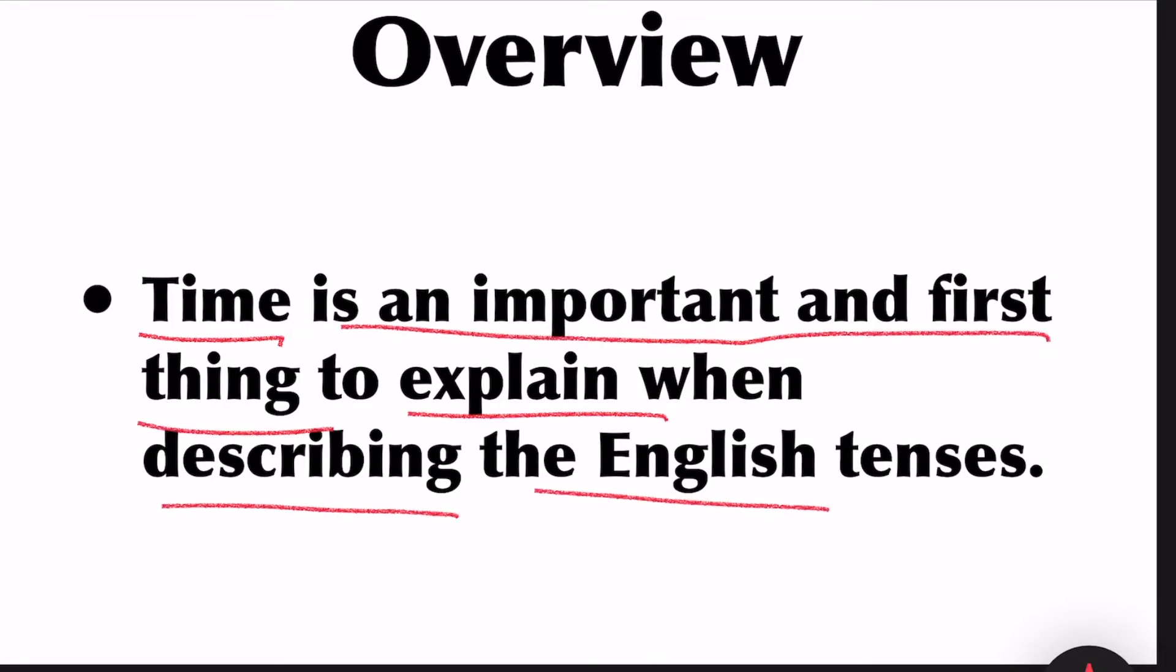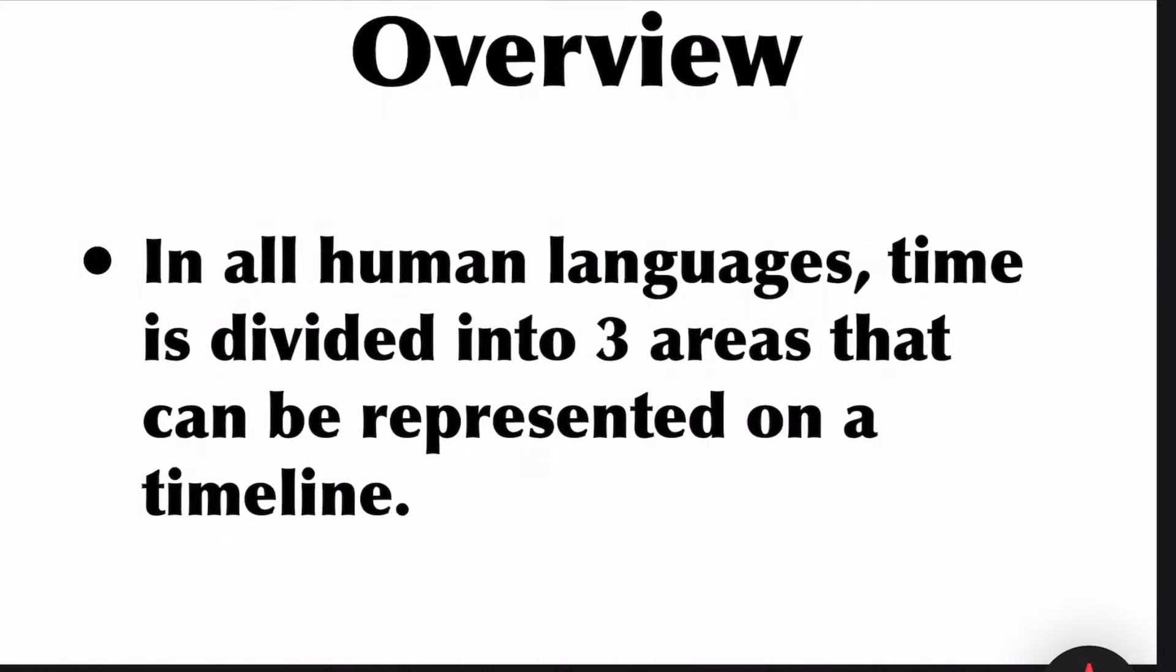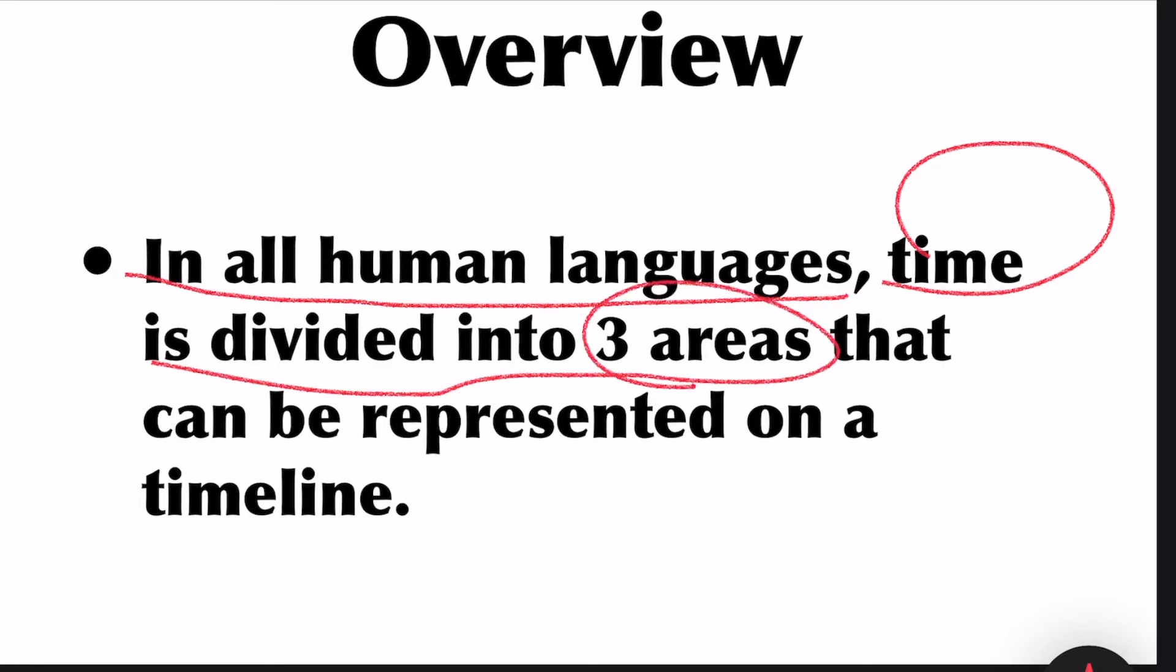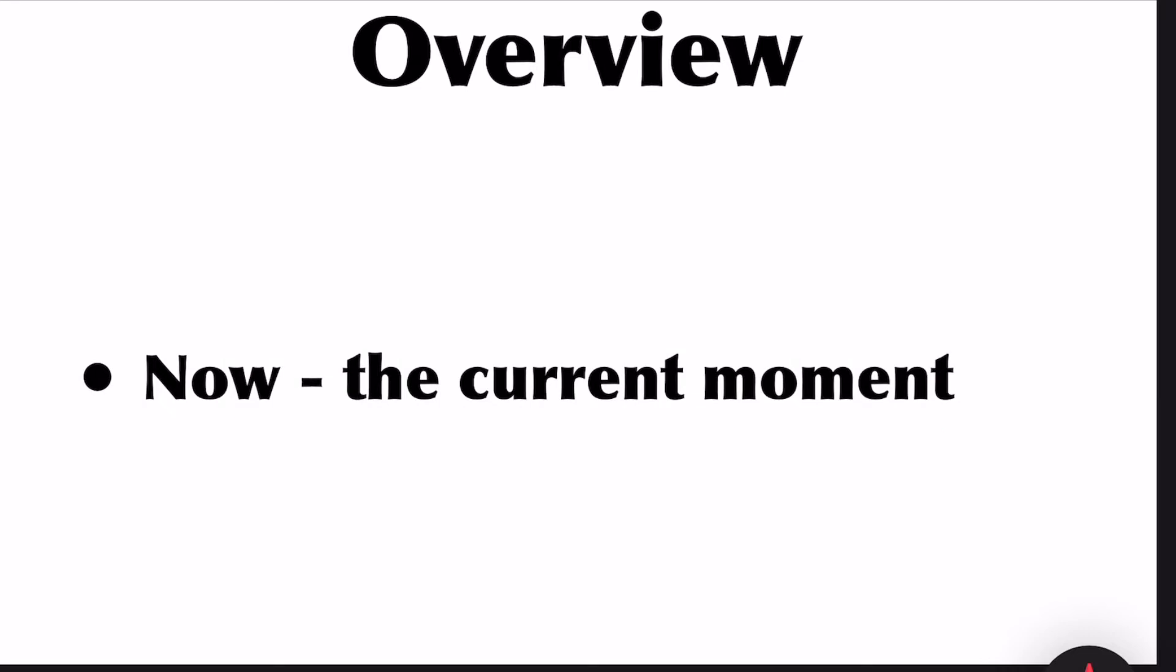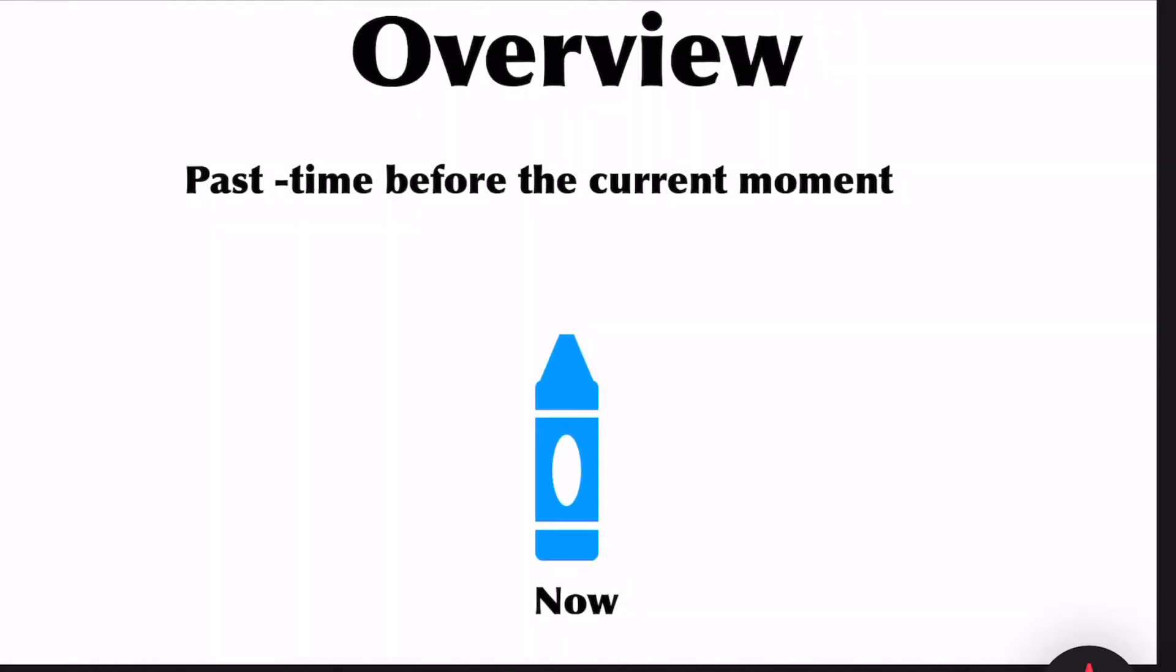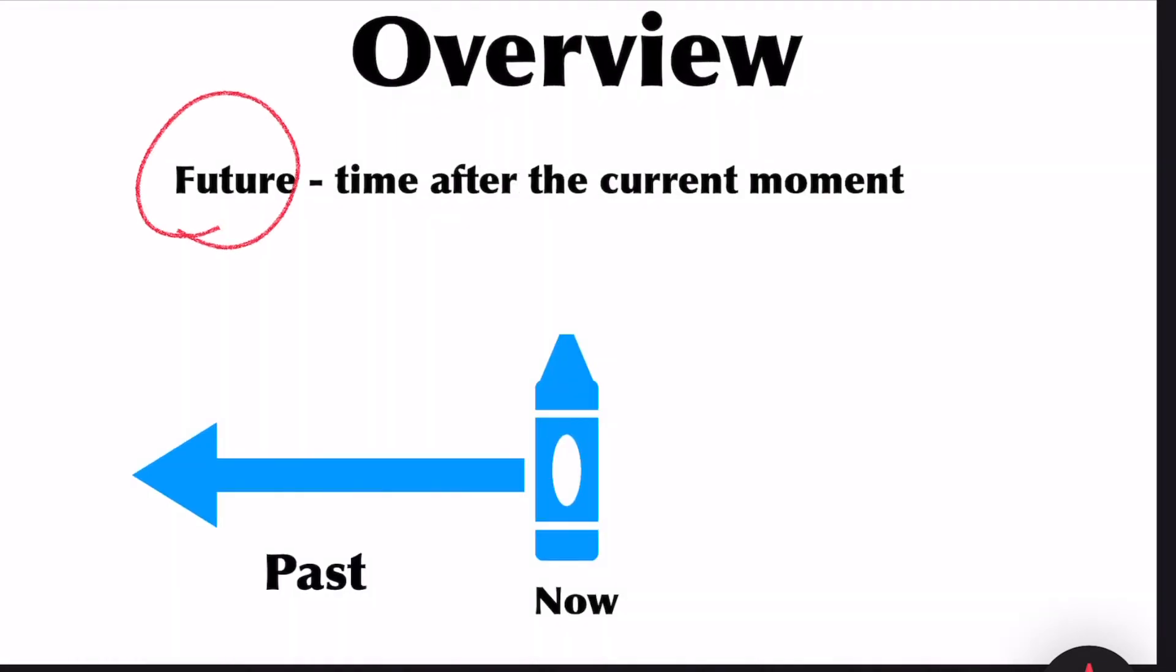Time is an important and first thing to explain when describing English tenses. In all human languages, time is divided into three areas that can be represented on a timeline: first now, the current moment; next past, time before the current moment; future, time after the current moment.